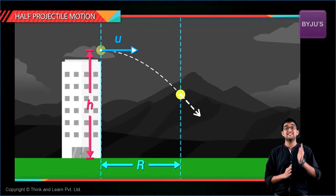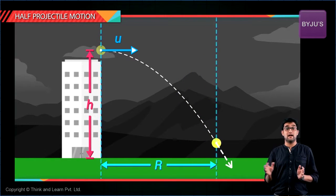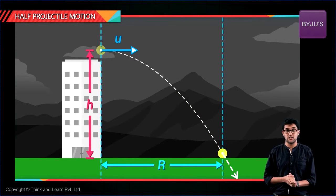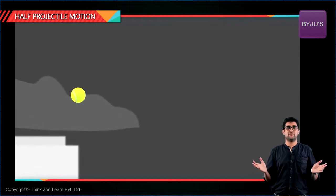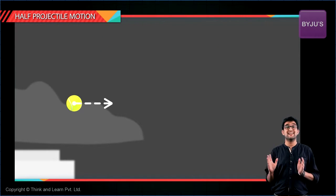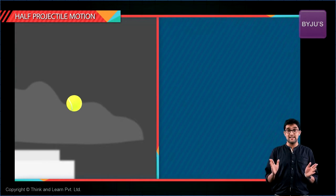The question is how far from this point of throwing will the ball land once when it hits the ground. So how do you do it? There's nothing but two motions right, a horizontal motion and a vertical motion. It's given that